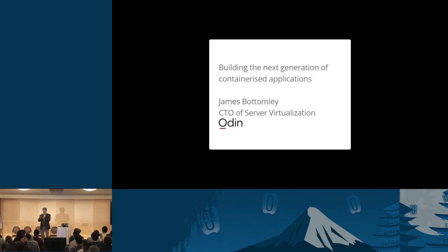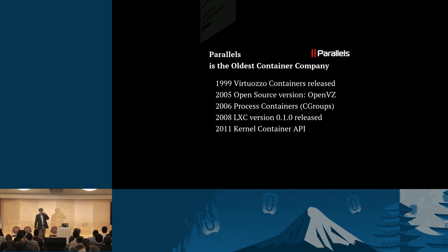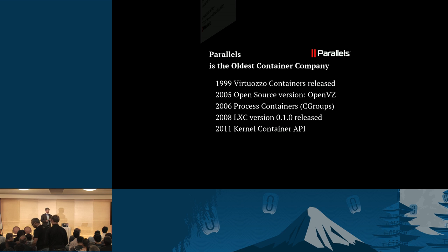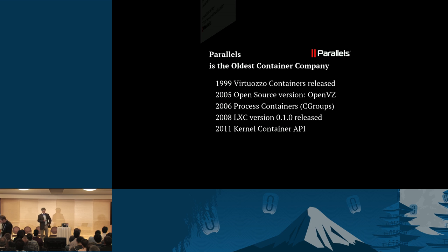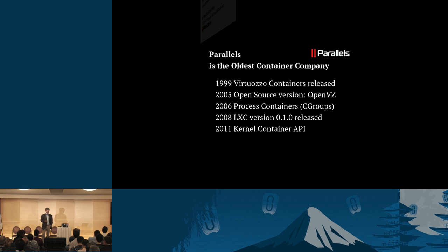Parallels was originally the company that did desktop for Mac and Linux containers. It actually began life as SWsoft, which was a Linux container company. Parallels is in fact the oldest container company in the world. As SWsoft, it released Virtuoso Containers in 1999. In 2005, we had an open source version called OpenVZ. In 2006, after the publication of the OpenVZ source code, Linux process containers were actually put into the kernel. They were something that a group of people headed by Paul Minaj looked at what OpenVZ did and decided was very useful functionality, so it went into the kernel, firstly as process containers, and then later as cgroups. On top of cgroups in 2008, LXC version 0.1 was released.